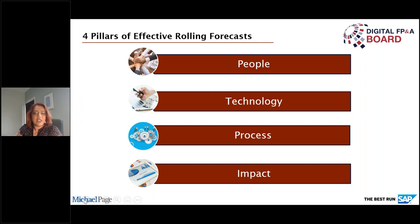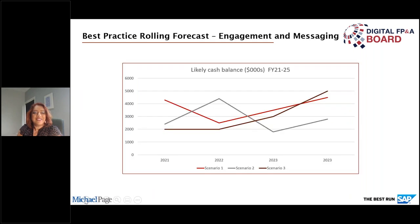The last key pillar is impact — something that can often be overlooked. This is comparing our forecast to the actuals to understand the variations, considering both the lost opportunities and benefits. We need to understand how close we were to the actuals and fine-tune those drivers to make the forecast more and more accurate.